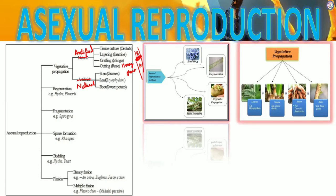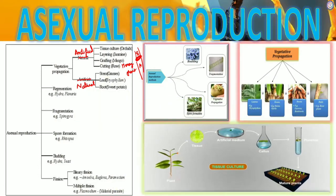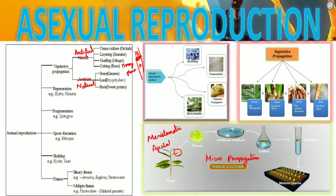The next topic is tissue culture, otherwise called micropropagation. Micro means small — something small is going to propagate and develop into a new organism. Here, a tissue is taken — specifically meristematic tissue, mostly from the apical region, which has a higher growth rate. That meristematic tissue is developed in an artificial culture medium containing auxin hormone, which is the growth hormone.